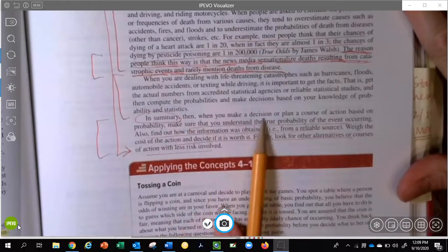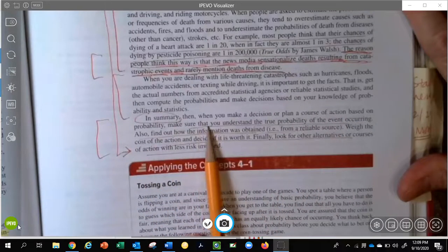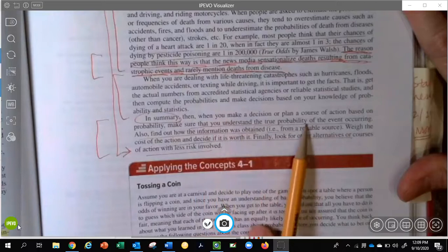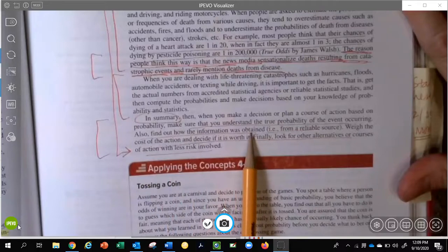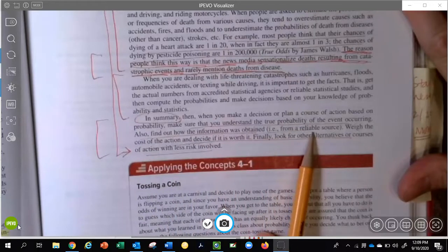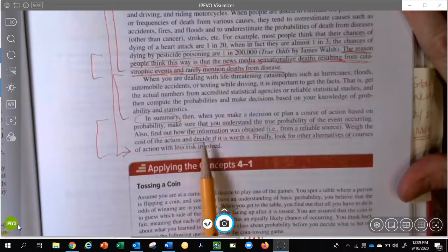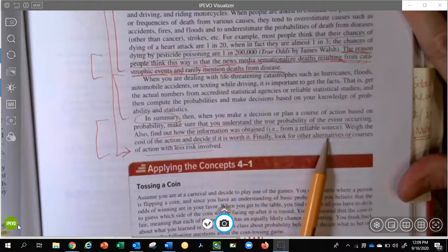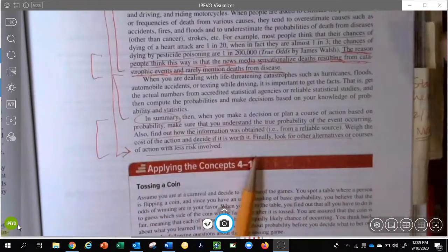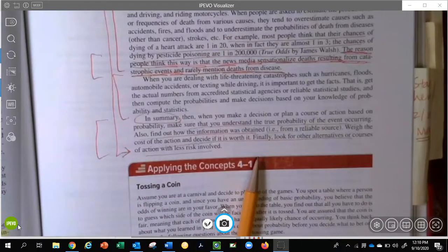In summary, then, when you make a decision or plan a course of action based on probability, make sure that you understand the true probability of the event occurring. Also, find out how the information was obtained. Is it a reliable source? Is it somebody just spouting off? What is it? Weigh the cost of the action and decide if it is worth it. Finally, look for other alternatives or courses of action with less risk involved. And this concludes Section 1 in Chapter 4.